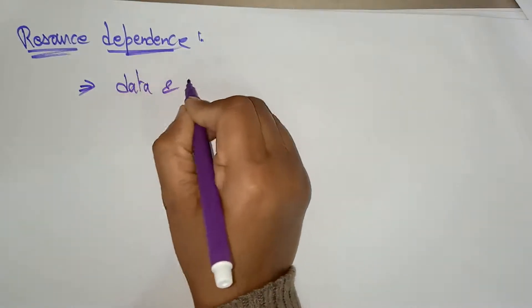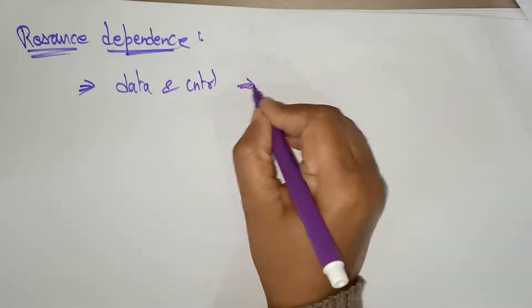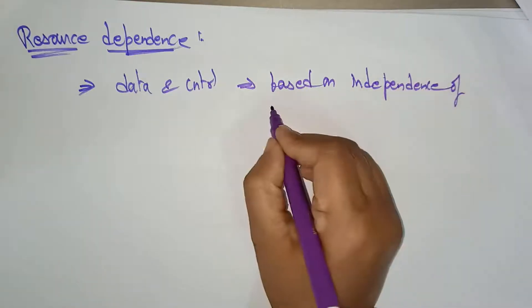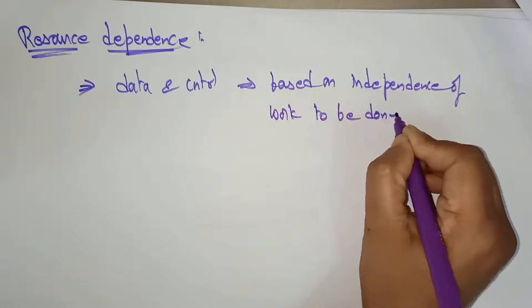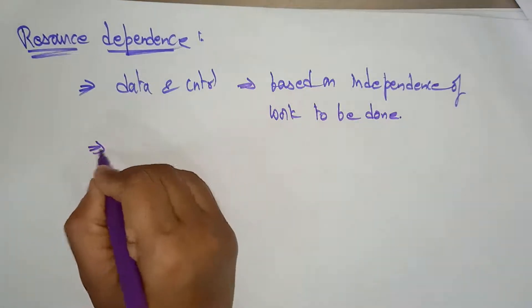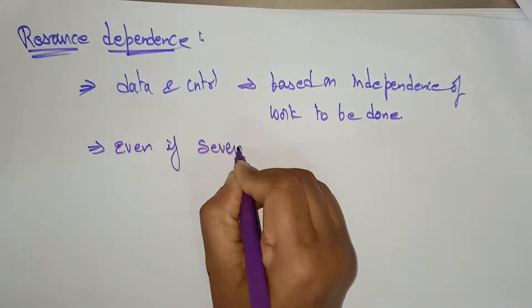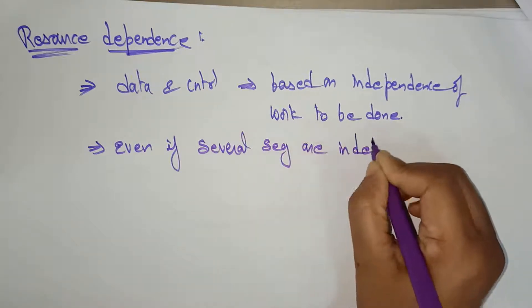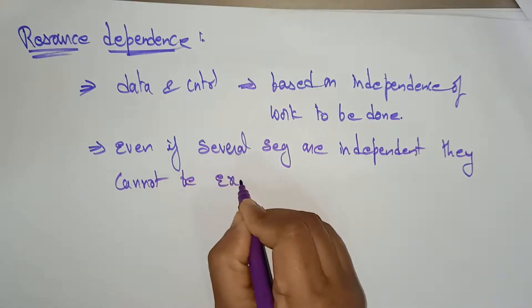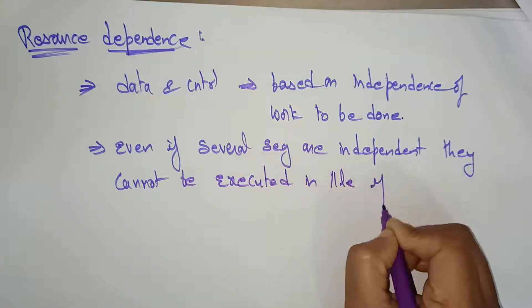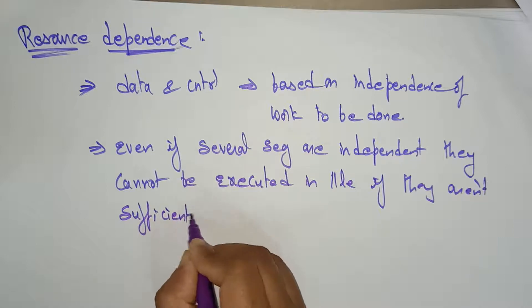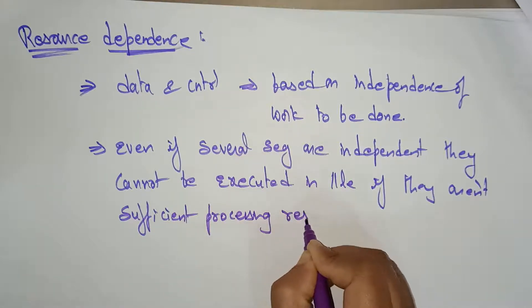Data and control dependencies are completely based on independence of work to be done. But even if several segments are independent, they cannot be executed in parallel if there are not sufficient processing resources. This is the key point — even independent segments cannot execute in parallel without sufficient processing resources.